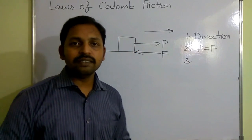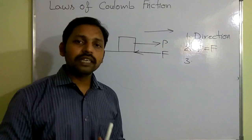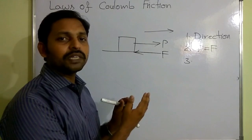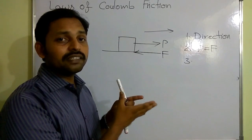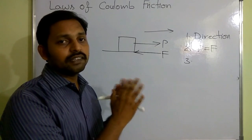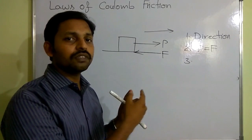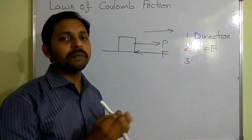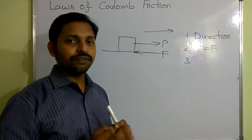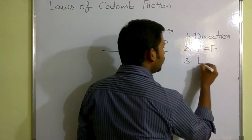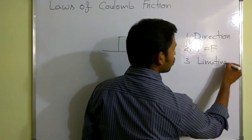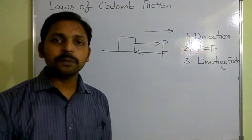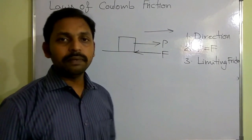The third law is about where we can have the maximum value of frictional force — at the limiting point. After that point, the object will have motion. At that point, the object is not in motion; it is under the state of rest. If we increase the force beyond that, it attains motion. At that point, it is going to experience the maximum frictional force, which is nothing but limiting frictional force.